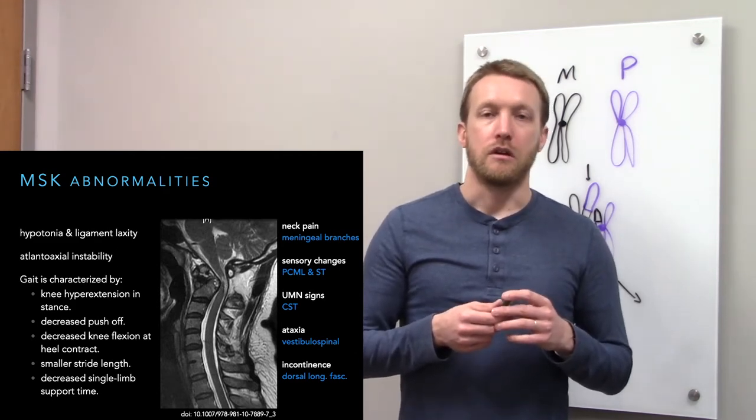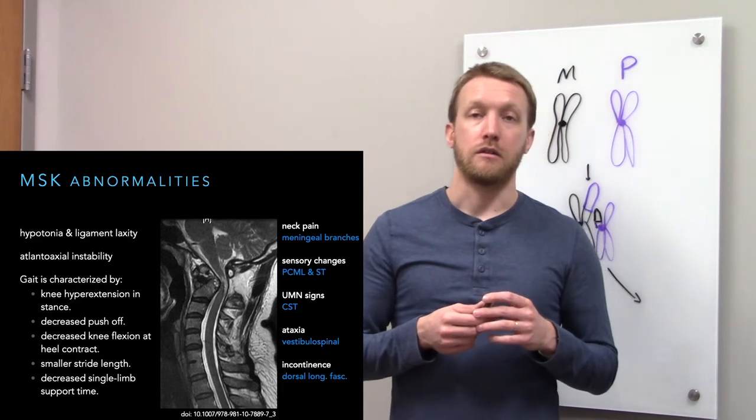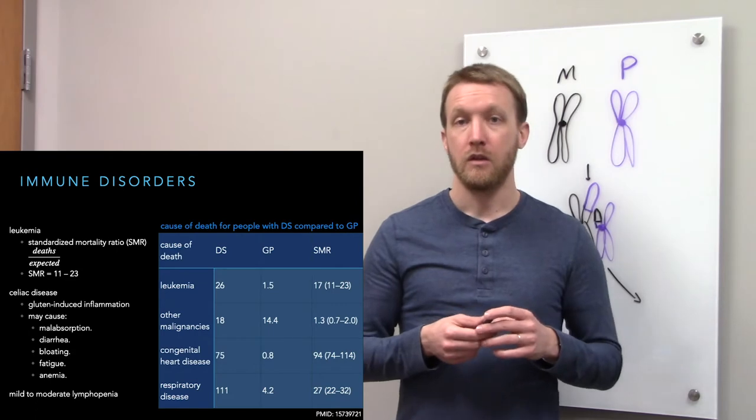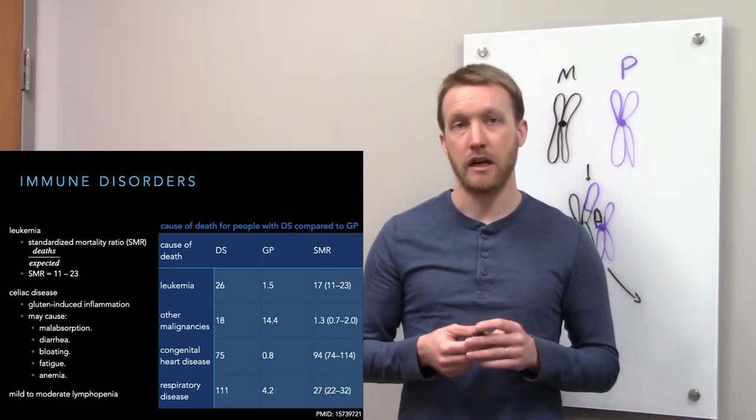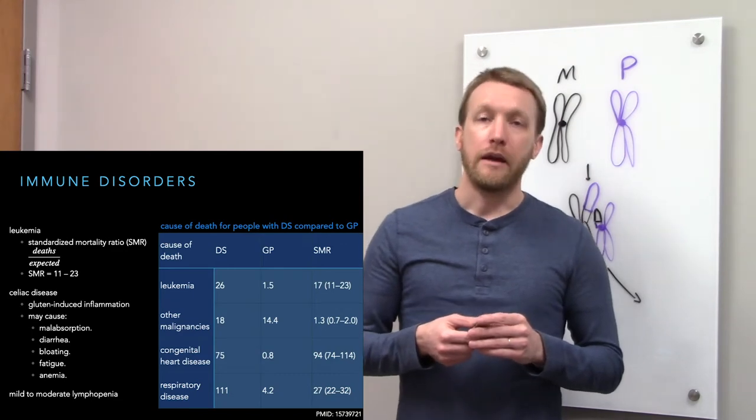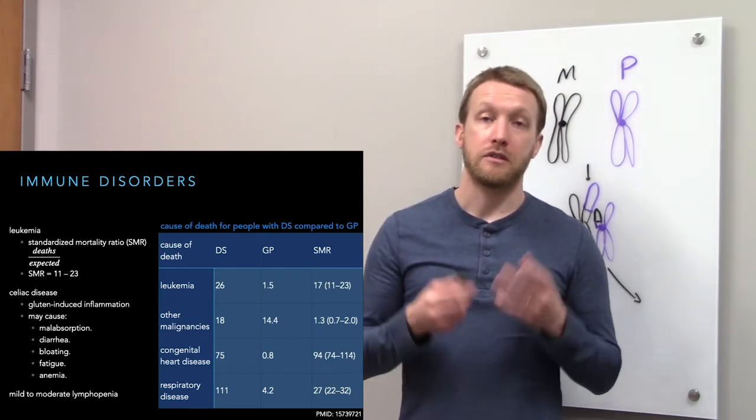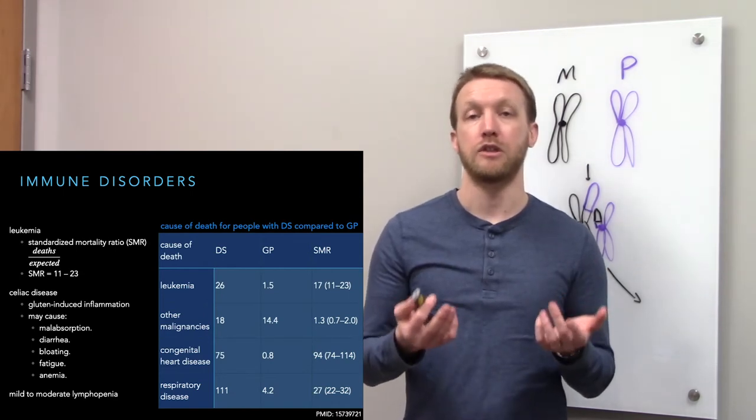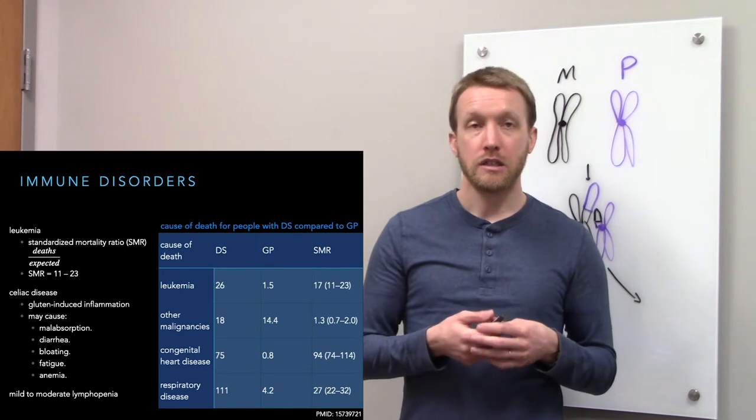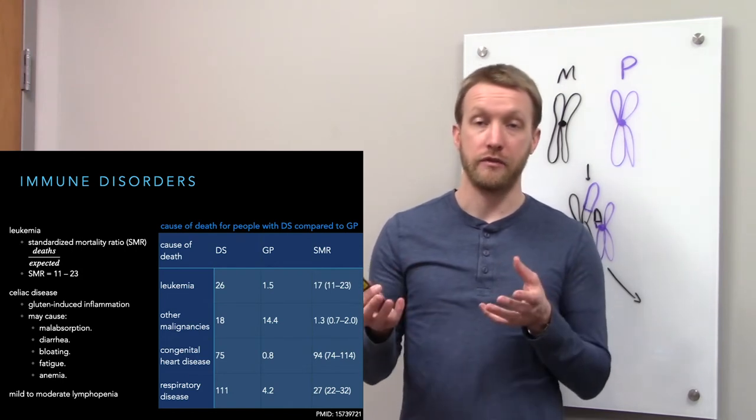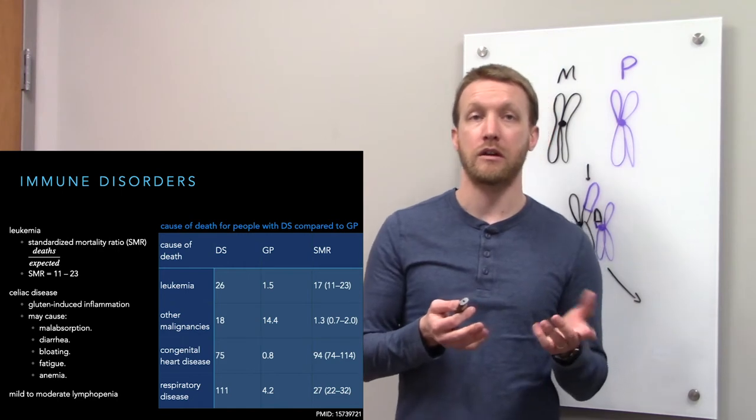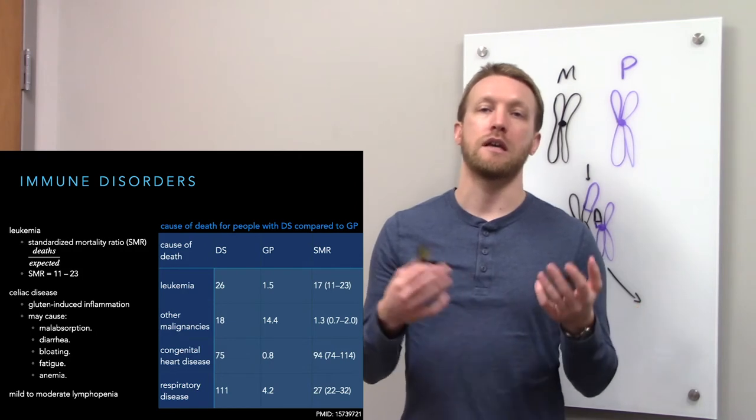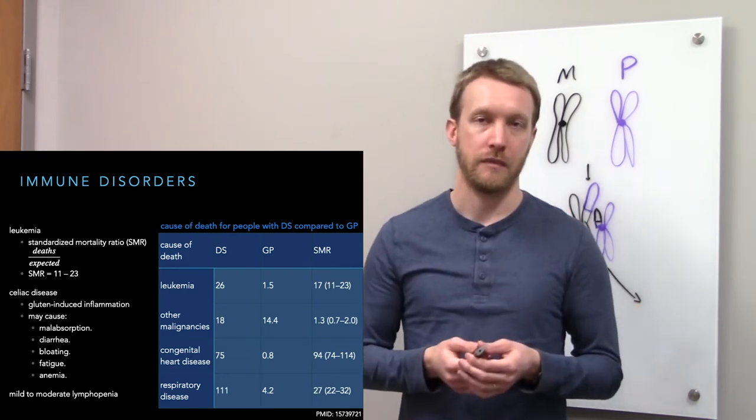The immune disorders come in a variety of types. One potential issue is leukemia. We're looking at the standardized mortality ratio. To calculate that, we look at the number of deaths in one group and compare that to the number of expected deaths taken from the general population. If we have about the same amount of deaths, we'll get a ratio of one. Anything greater than one suggests a higher risk of mortality in our group of interest.